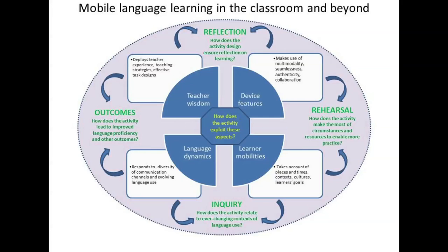That guide explains what we mean by Mobile Pedagogy, gives examples of activities that you can try out, and gives a framework for rethinking your practice. Briefly, the diagram summarising the framework has at the centre the question: how does the activity exploit these aspects? There are four quadrants: teacher wisdom, device features, learner mobilities, and language dynamics. It's a first step towards helping teachers design learning that will take place either in the classroom or beyond — with the emphasis on beyond the classroom, but looping back into classroom activity to discuss what's been done outside.